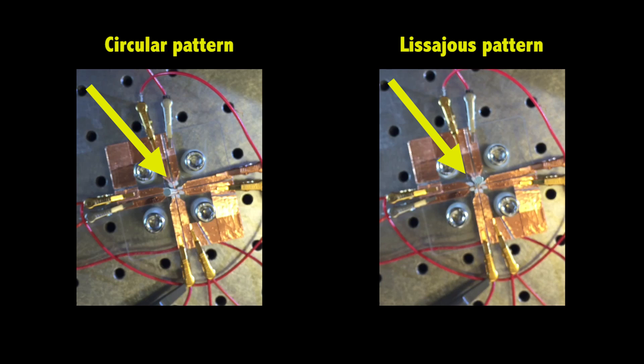By heating specific areas of the fiber in sequence, they found they can produce more complex movements. For example, in their lab tests, the team used this technique to get the fibers to move in circles and then in figure eights.